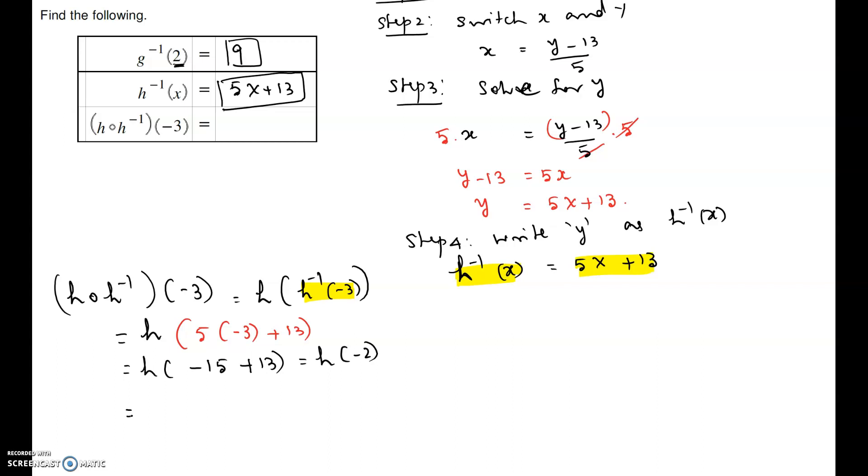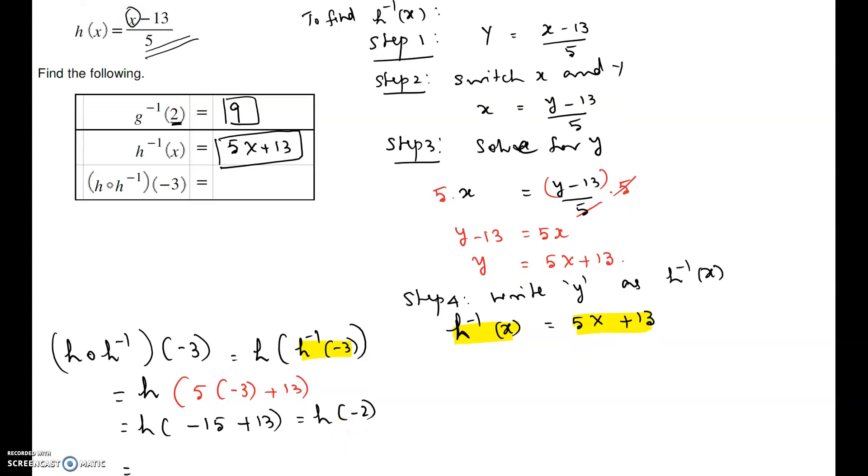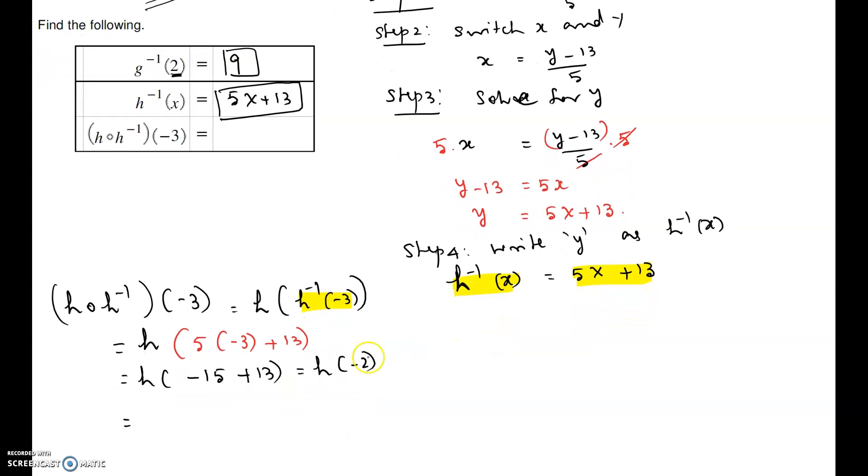We have to go to the h function. The h function is x minus 13 over 5. In this one, we have to plug in x equal to negative 2. This x here must be changed to negative 2. So negative 2 minus 13 over 5. Negative 15 over 5 which is equal to negative 3.